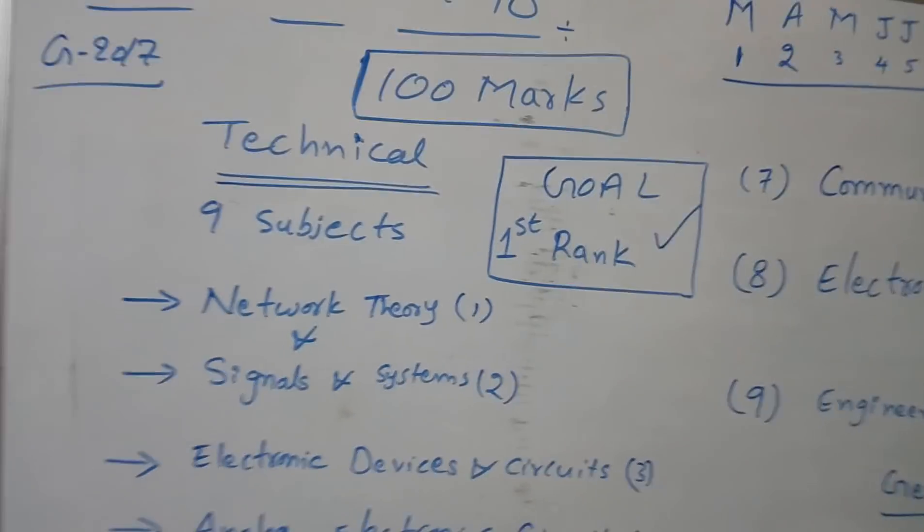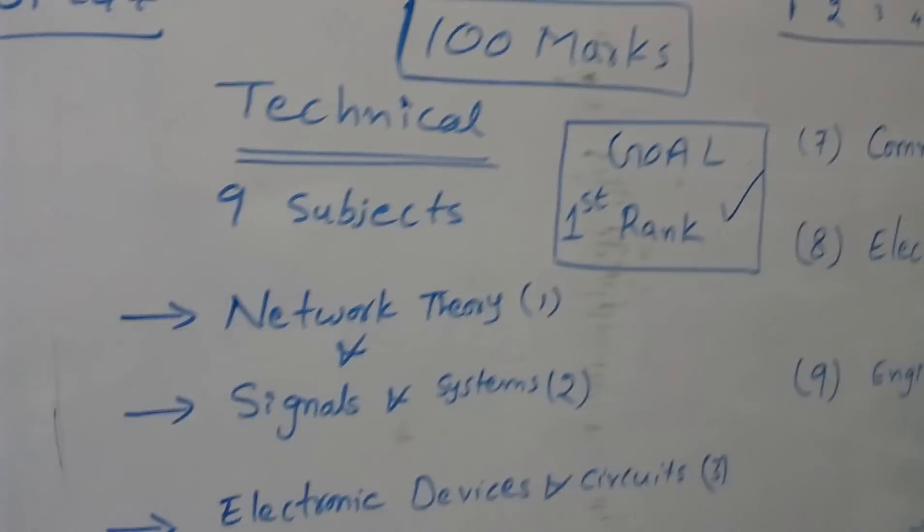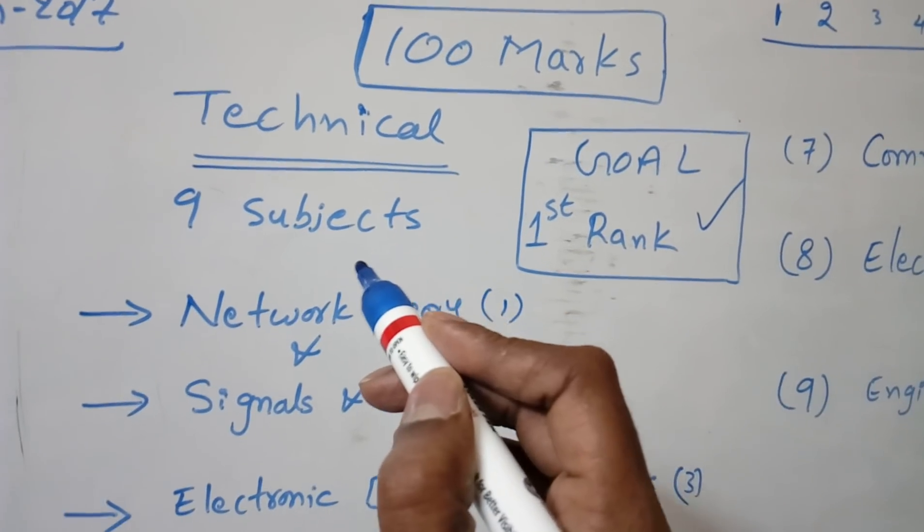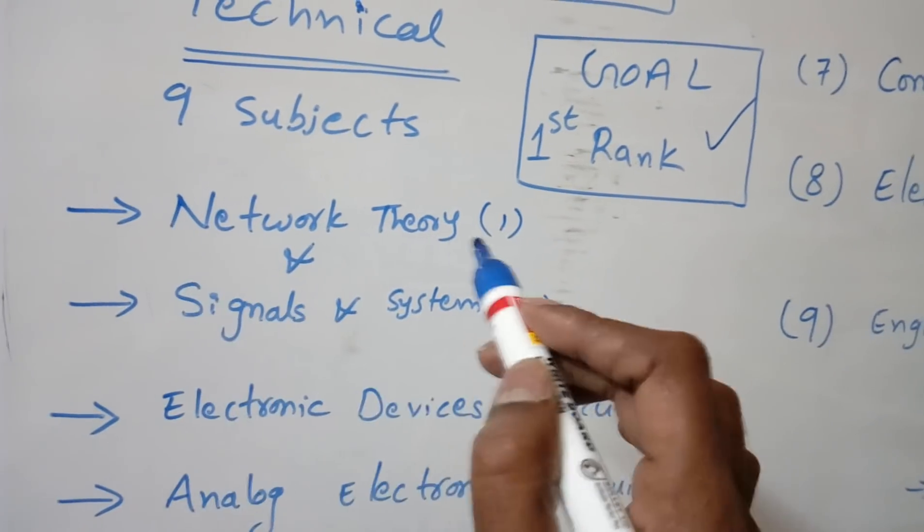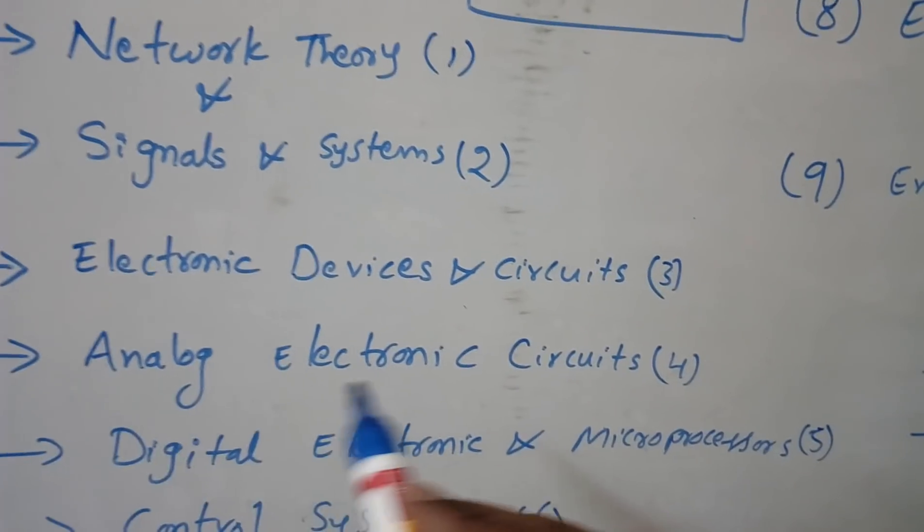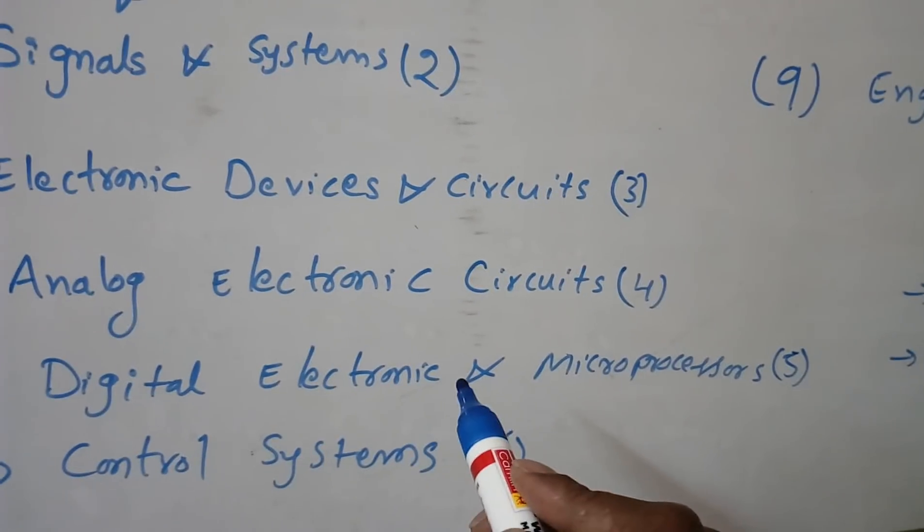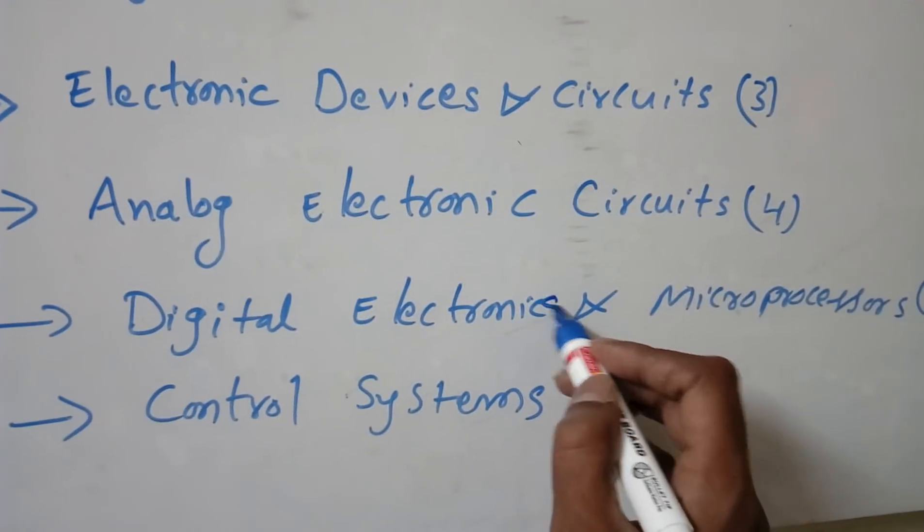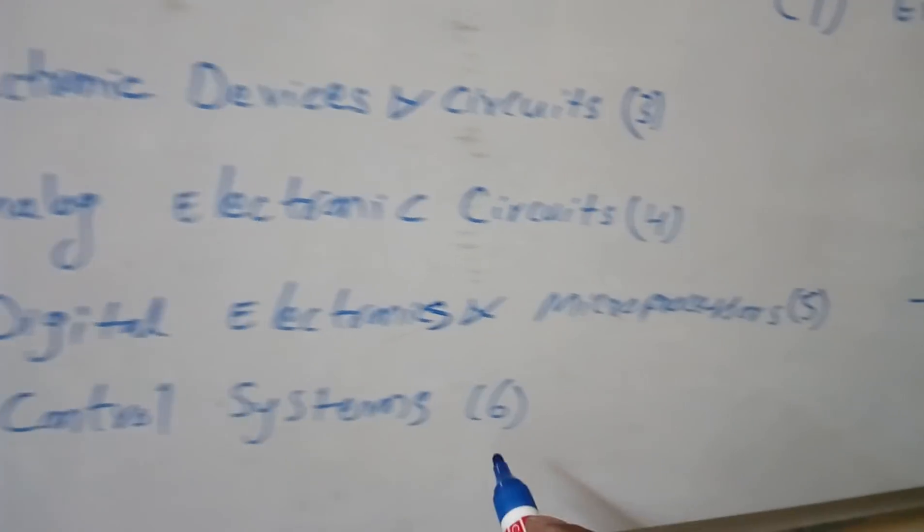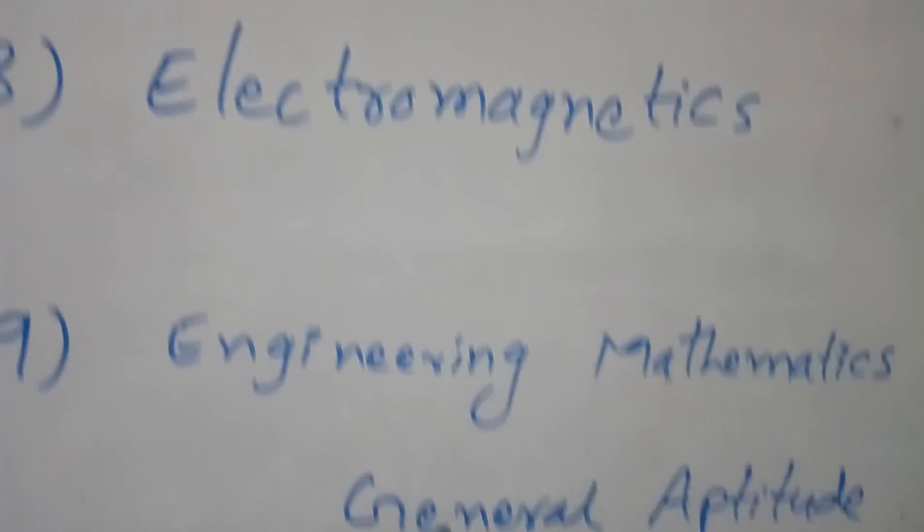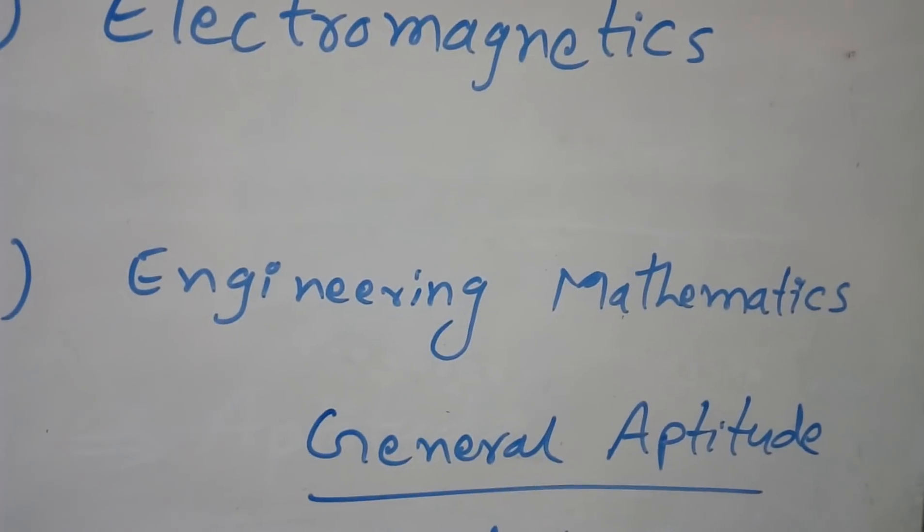Everyone knows the technical subjects are nine subjects including engineering mathematics: Network Theory, Signals and Systems, Electronic Devices and Circuits, Analog Electronic Circuits, Digital Electronic Circuits and Microprocessors, Control Systems, Communication Systems, Electromagnetics, and Engineering Mathematics.